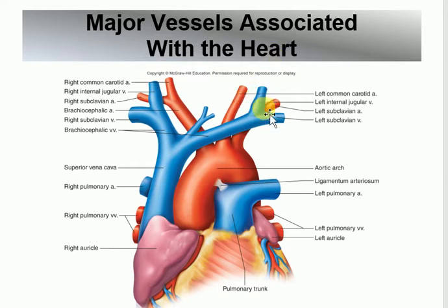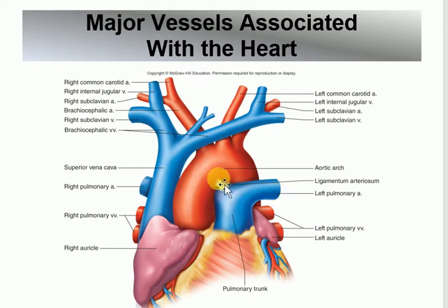The pulmonary trunk divides into the right and left pulmonary arteries — one going to each lung. On the venous side of the pulmonary circuit, note there are two right pulmonary veins and two left pulmonary veins — four pulmonary veins total returning blood to the left atrium.